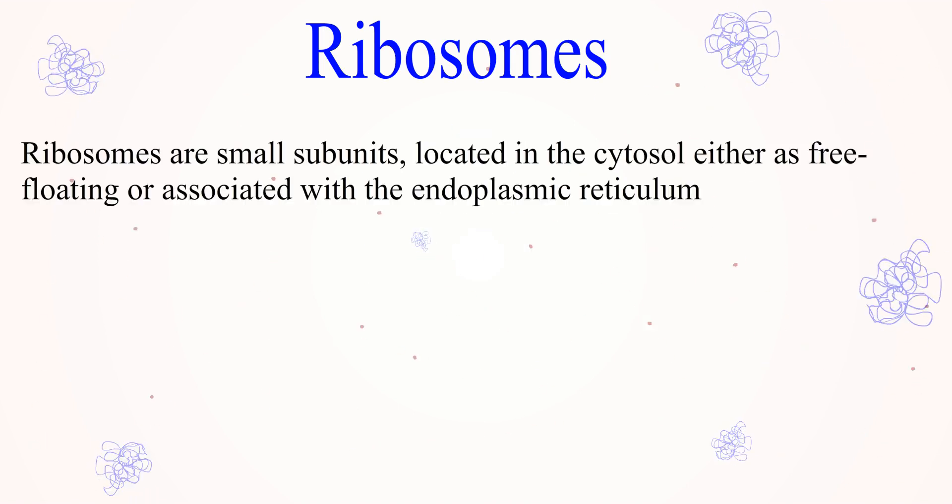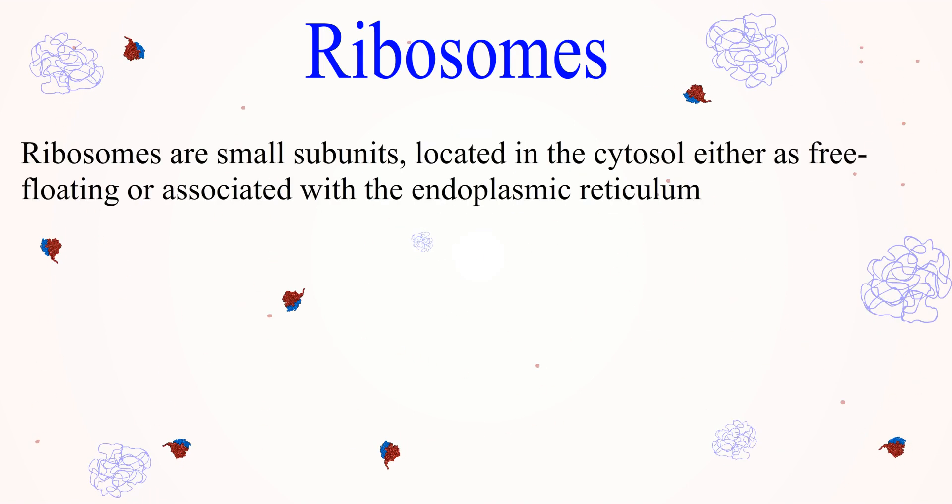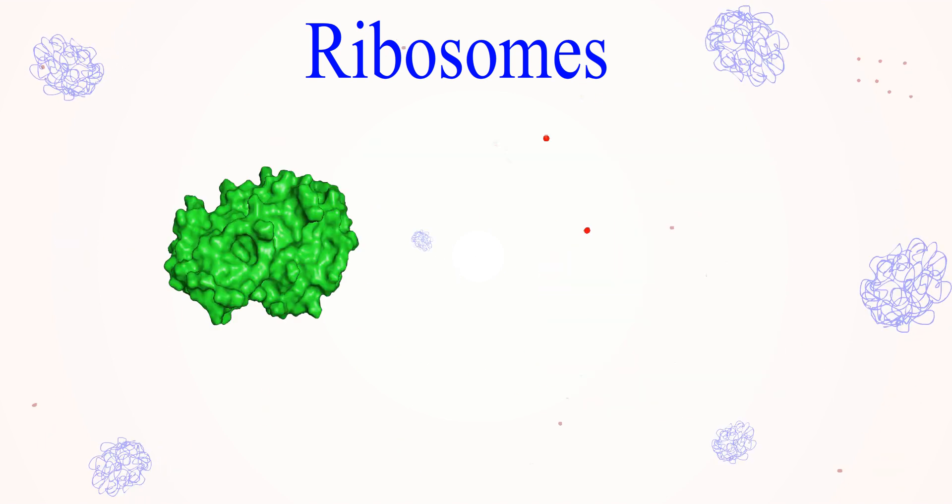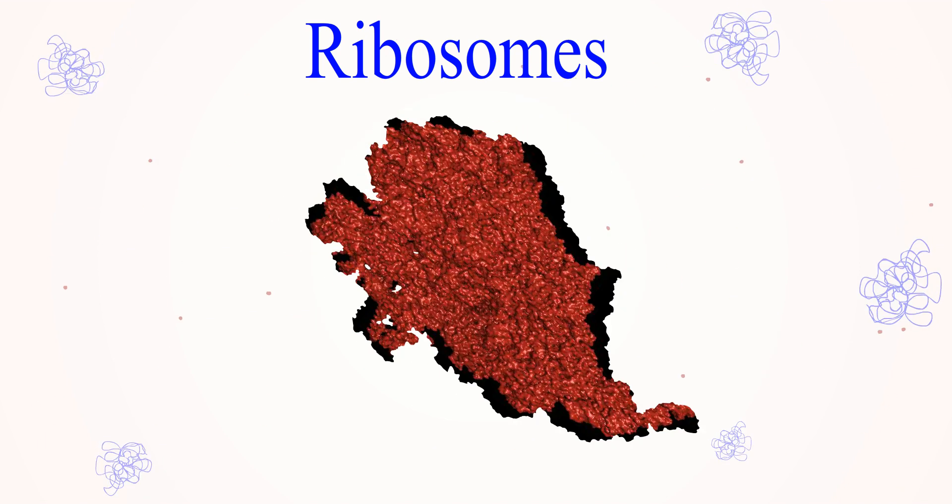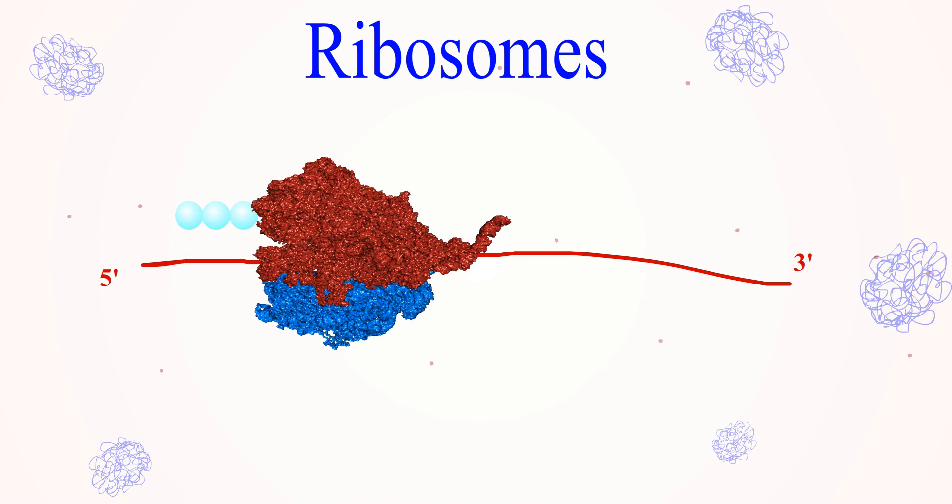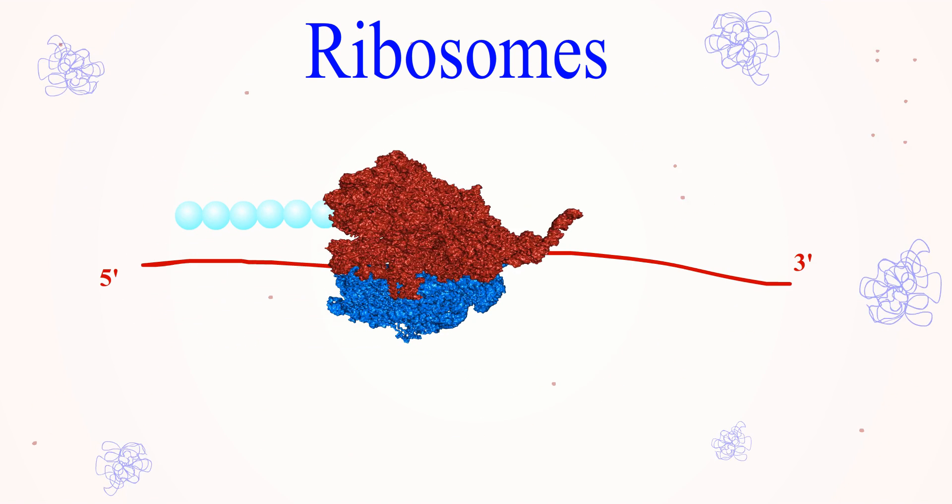What are ribosomes? Ribosomes are small subunits located in the cytosol, either free-floating or associated with the endoplasmic reticulum, that are composed of protein and rRNA. During translation, the ribosomes bind to the mRNA at the 5' end and read the mRNA from 5' to 3' direction.